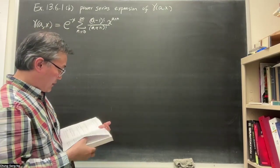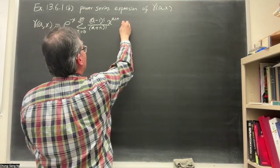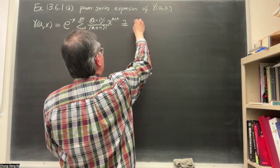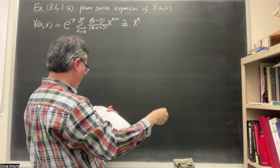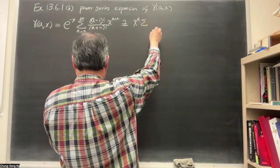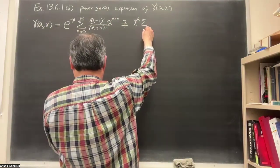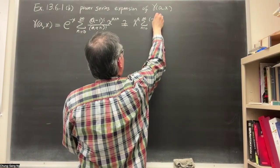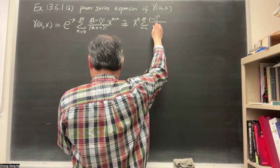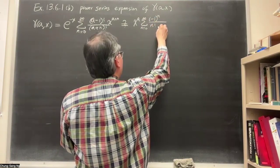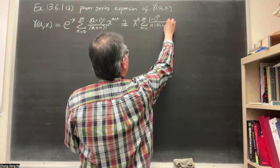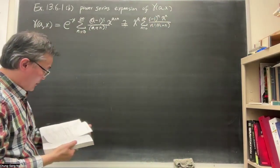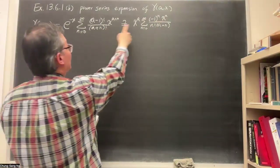Just a page before that. We want to show that this equals a power series where you factor out x^a, and the rest is integer powers — a series from n=0 to infinity of (-1)^n divided by n!(a+n), times x^n. So Part B is to show that these two expressions are the same.